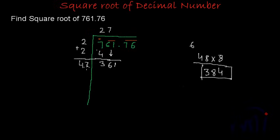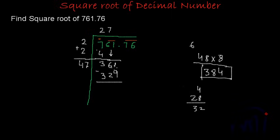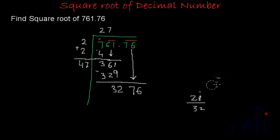If I put 7 here, the divisor becomes 47. 47 multiplied by 7: 7 sevens are 49, carry 4; 7 fours are 28, plus 4 is 32 — so we get 329. When we subtract, 361 minus 329 gives remainder 32. Now I bring down 76. Since 76 comes after the decimal point, I add a decimal point in the quotient.